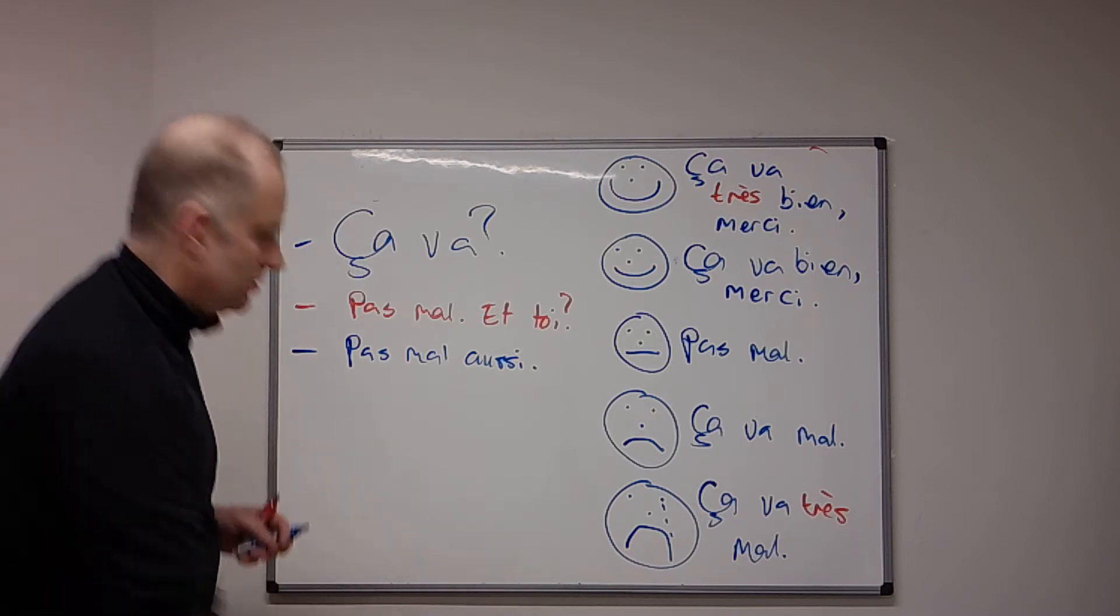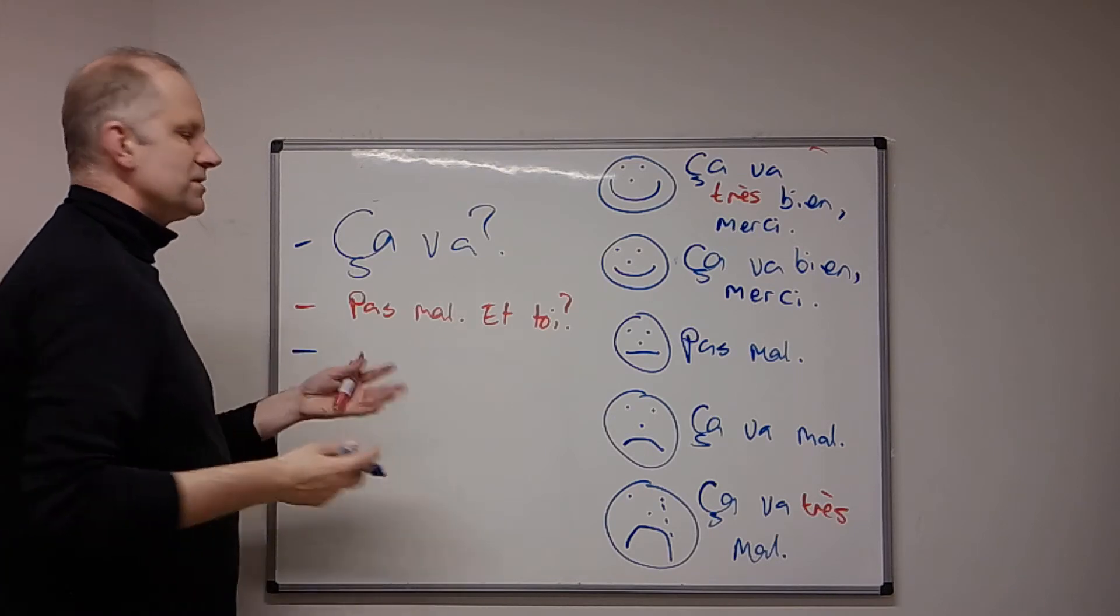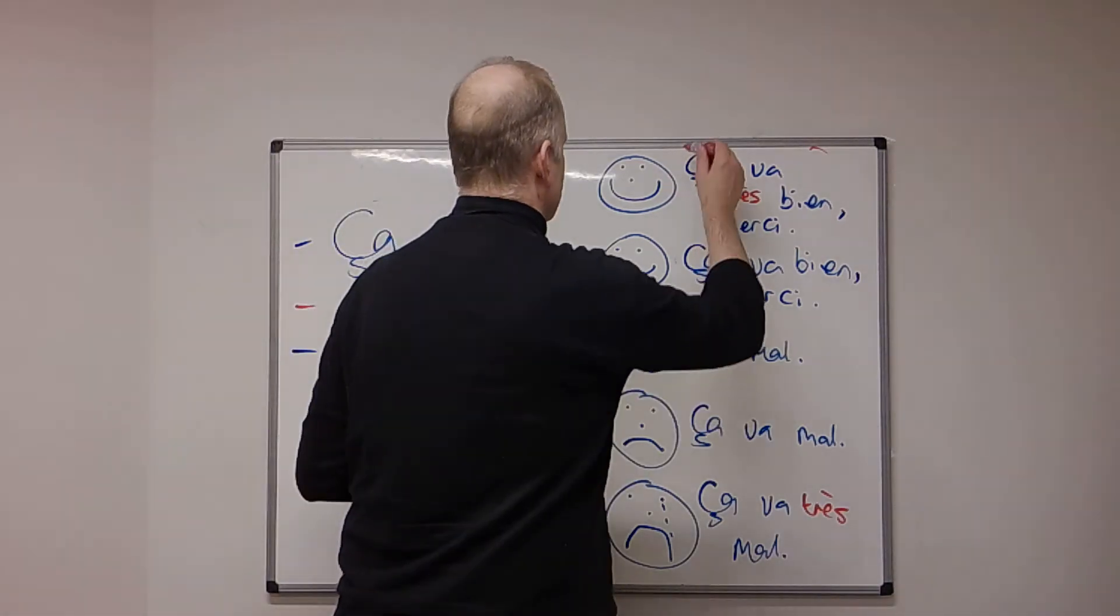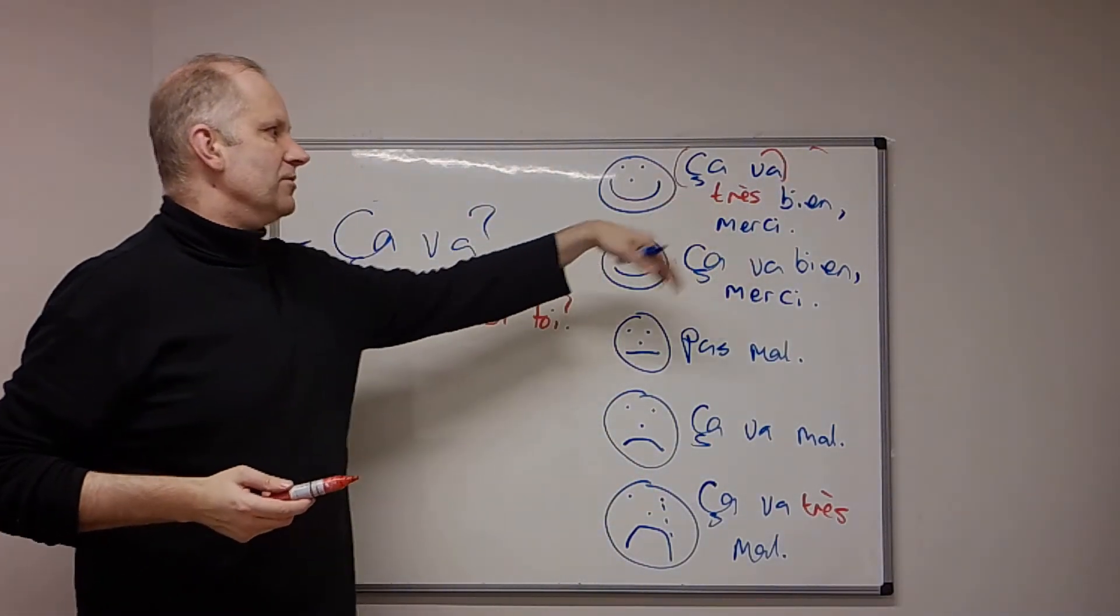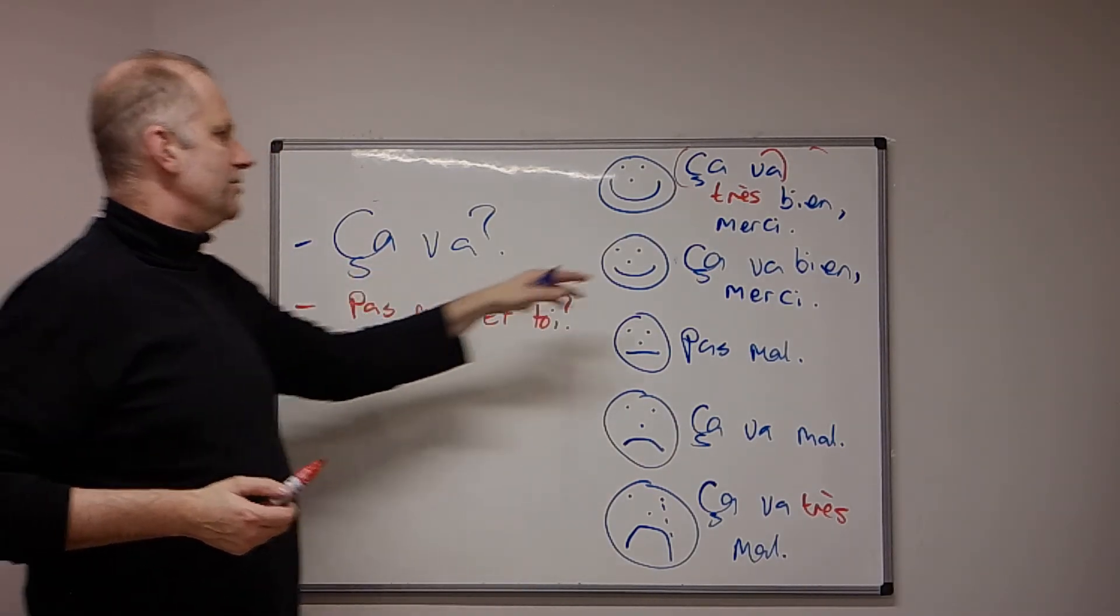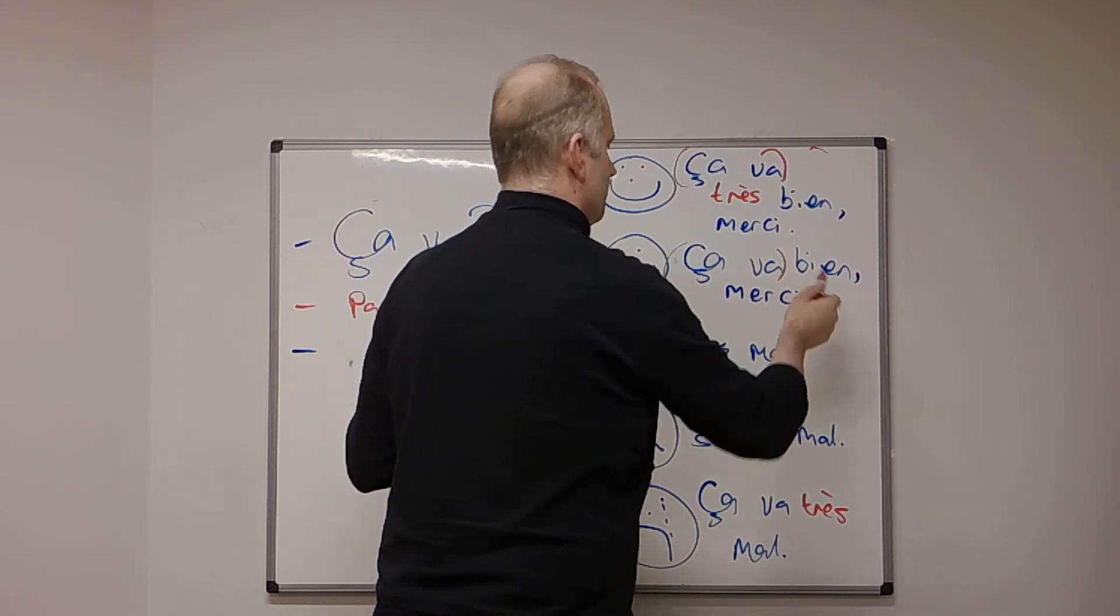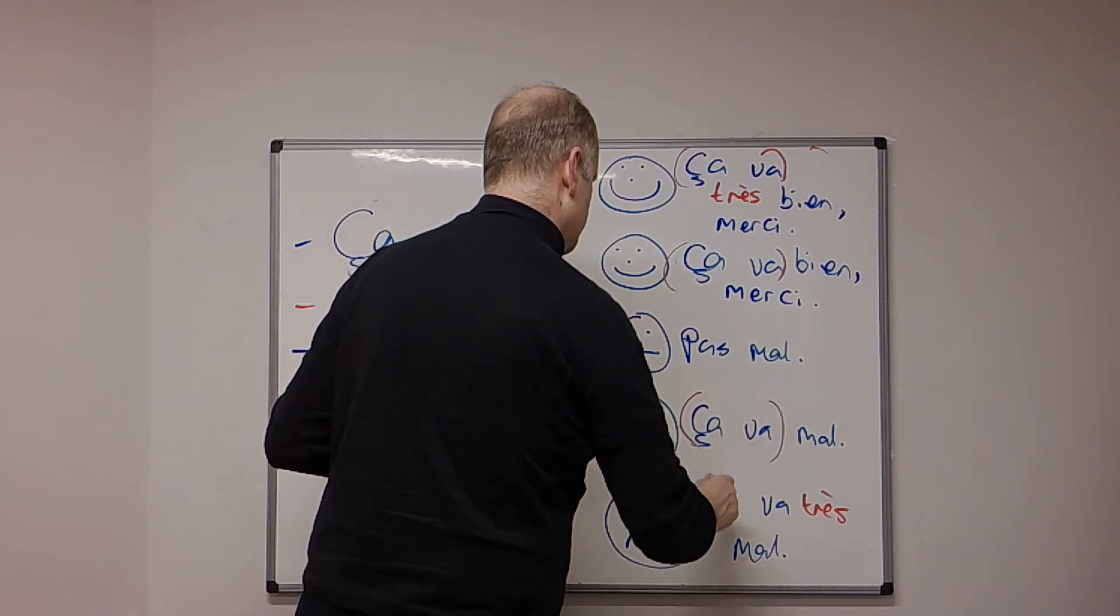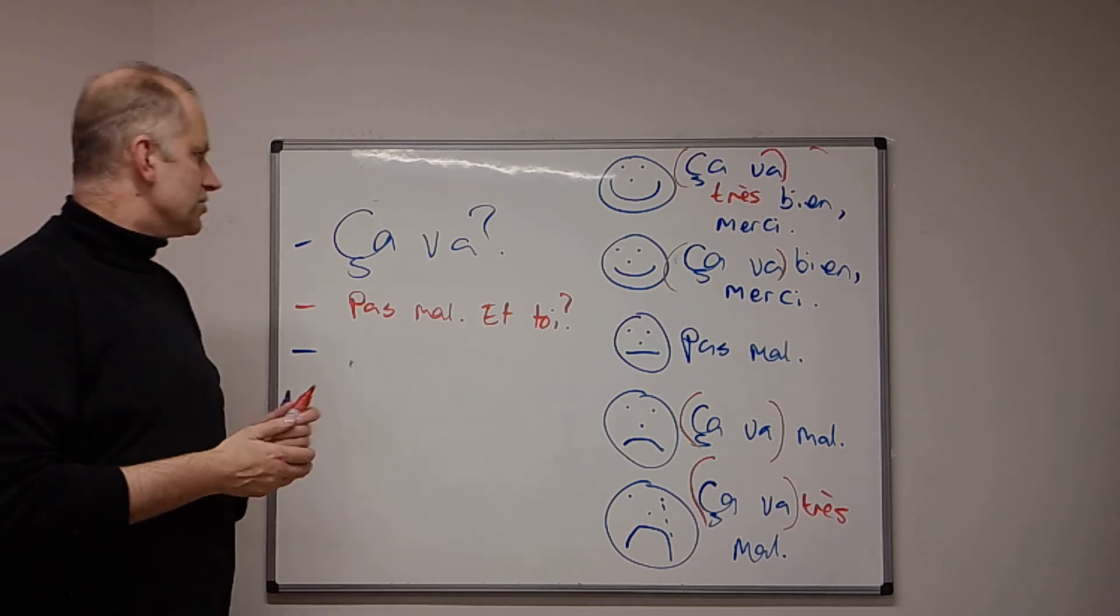Or you could say something like, très bien. You don't have to say the whole ça va part. We could put them in brackets, really. You could say, somebody says, ça va, you could say, ça va très bien, or just, très bien. Ça va, you could just say, bien, okay, bien, merci. And the same as those. It's up to you whether you want to do the long form or the short form.